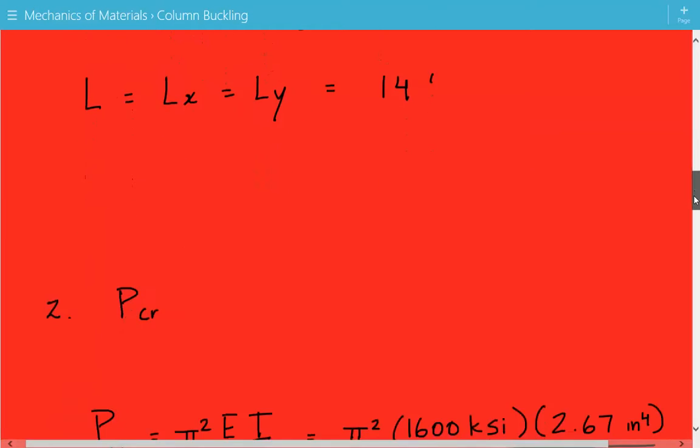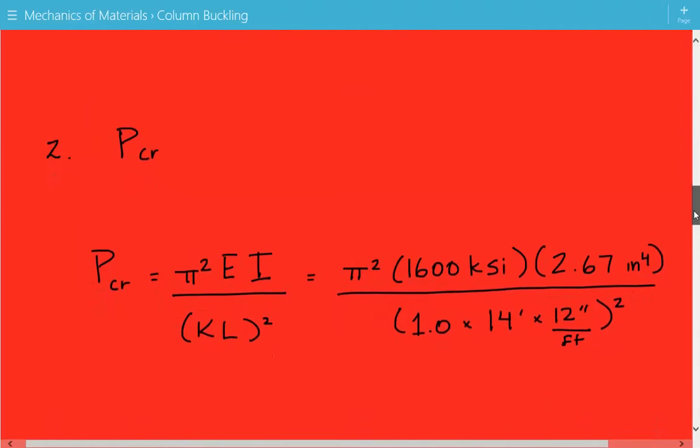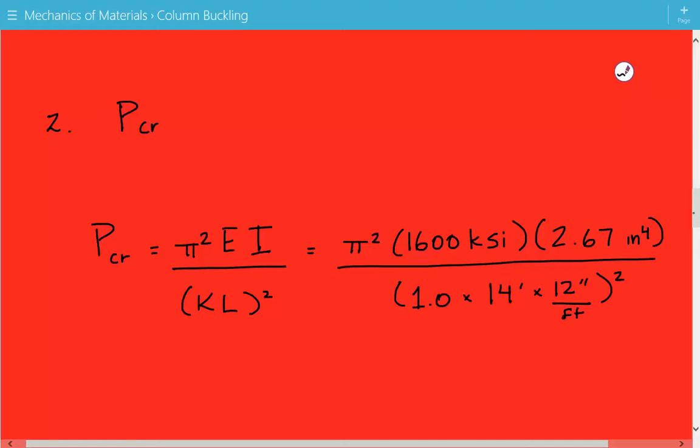Now we're going to calculate the critical buckling load using the Euler buckling formula. It's equal to pi squared times the modulus of elasticity times the moment of inertia divided by the effective length squared. The effective length is equal to k times l.